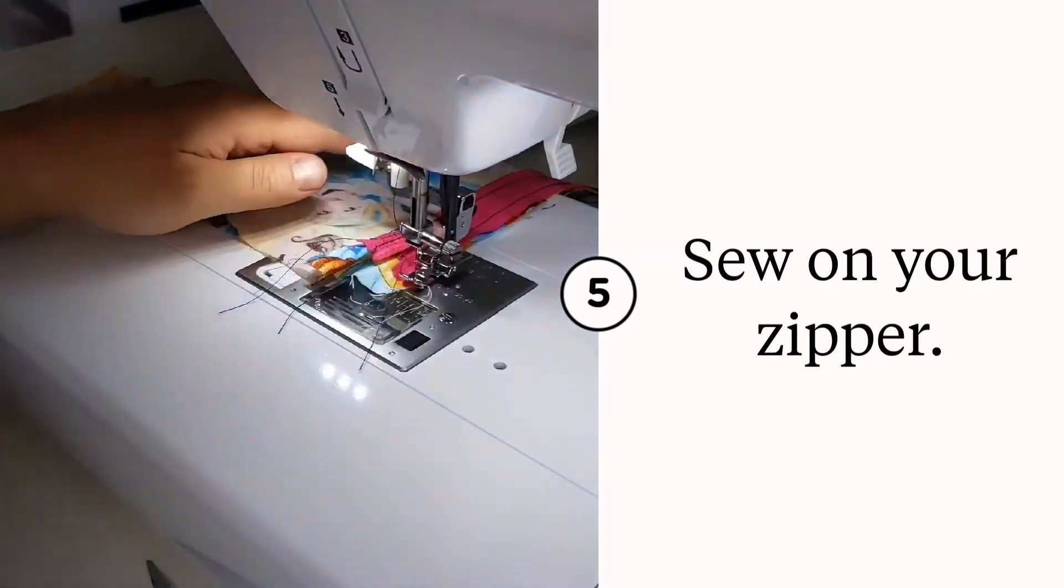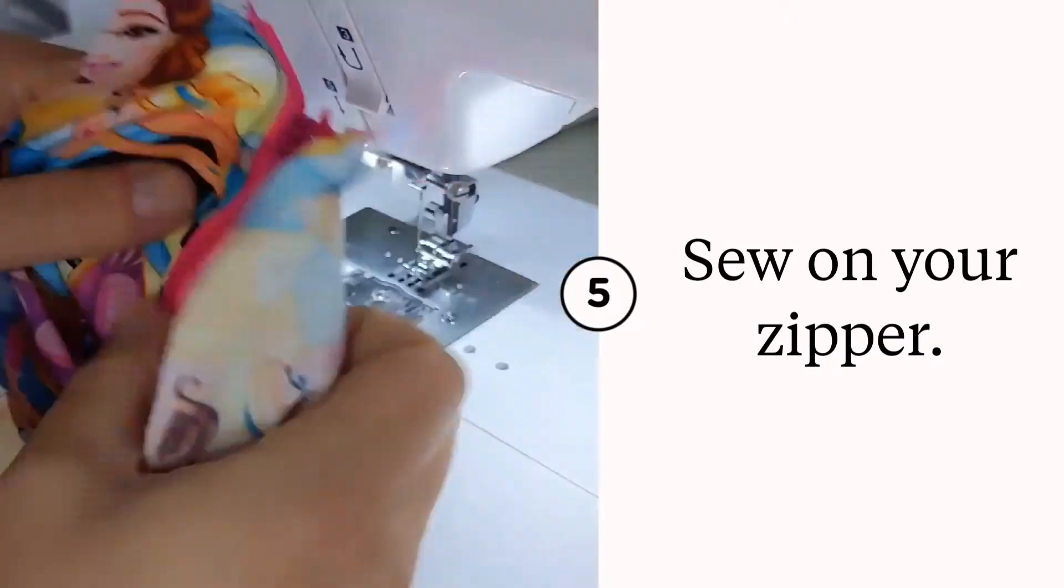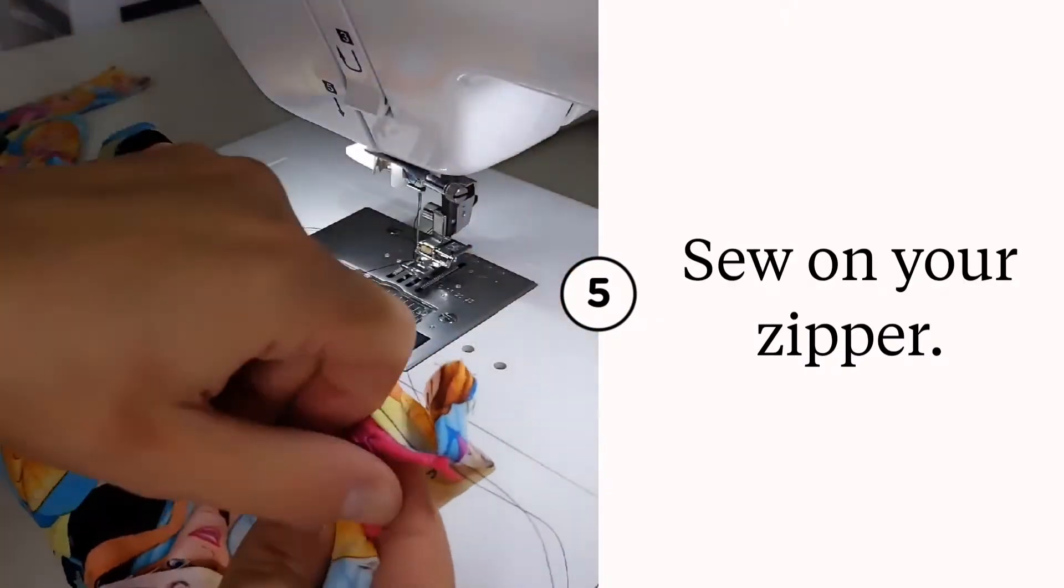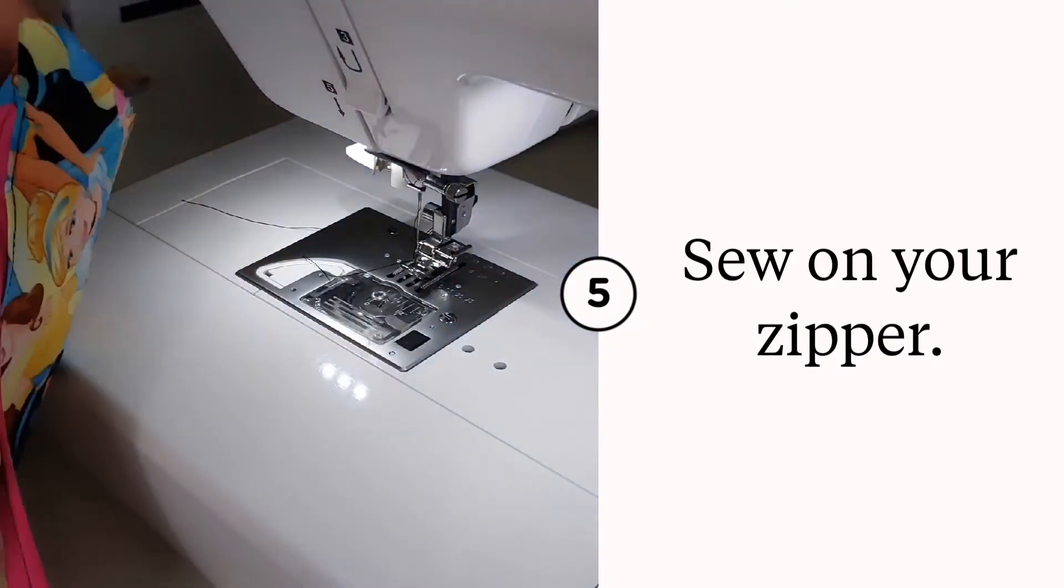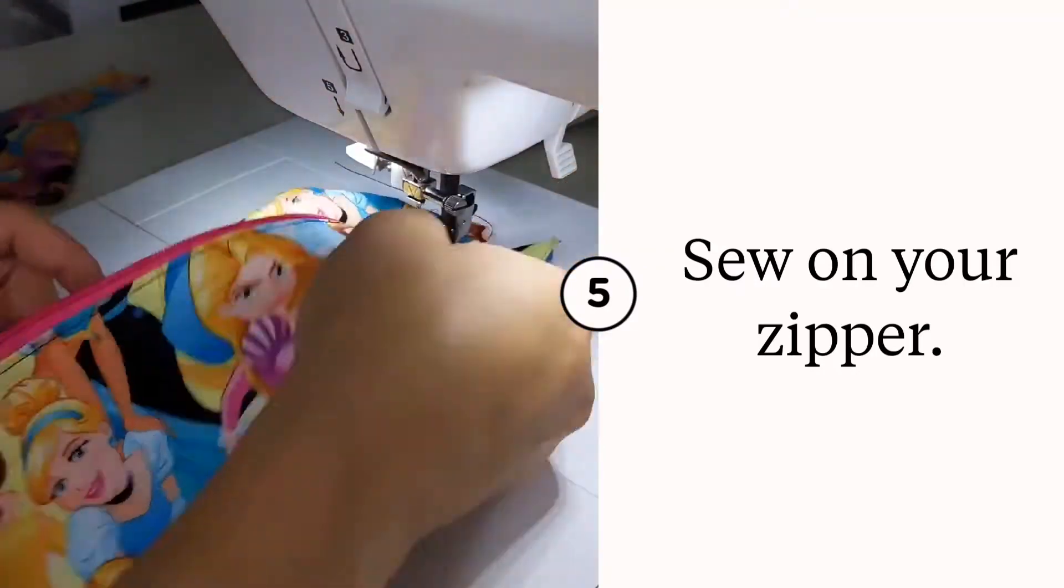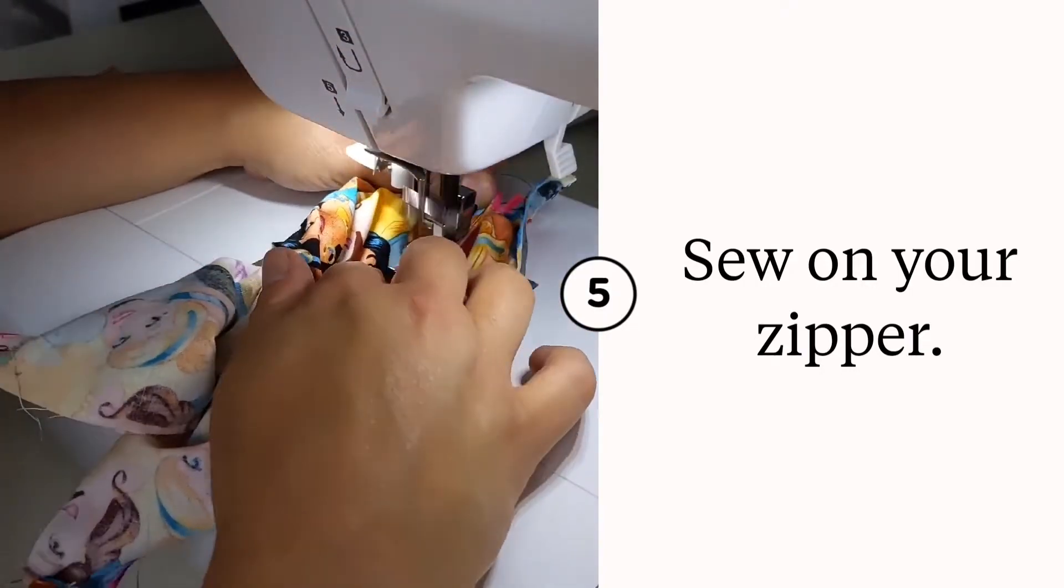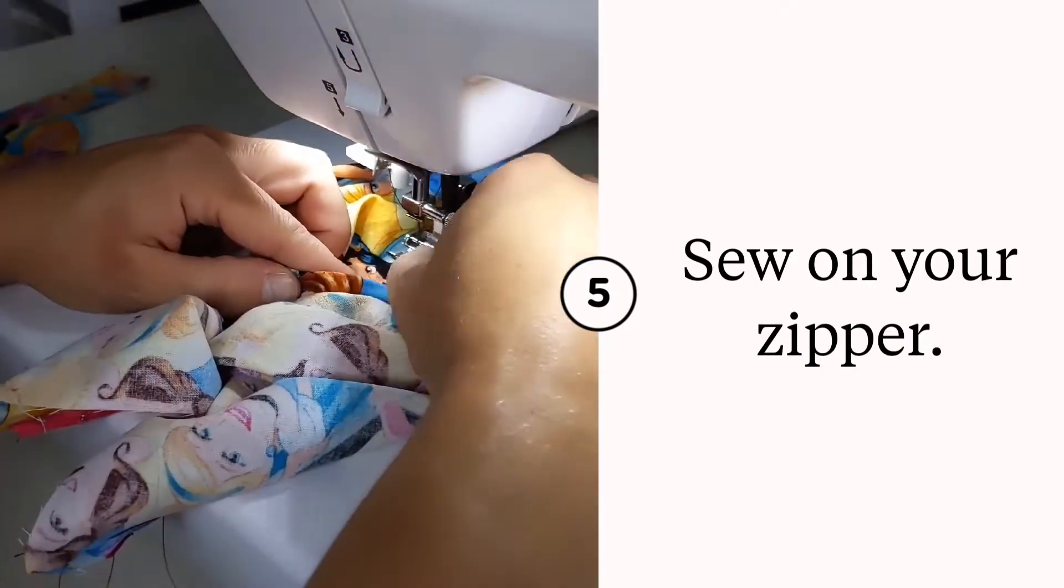And as you can see, we're just sewing it right on here. I'm gonna flip it, top stitch, which is sort of awkward here, but you get the idea. It's really hard to do for the second piece.